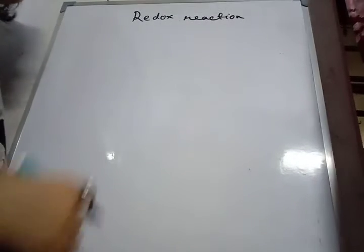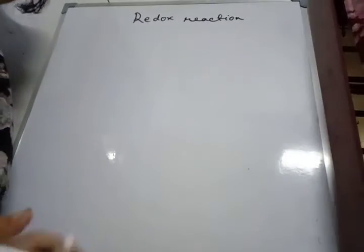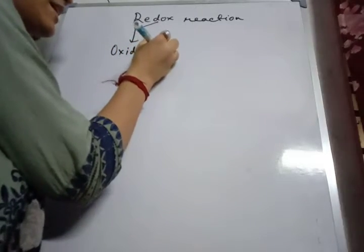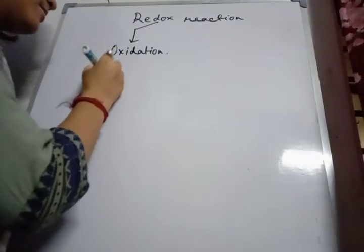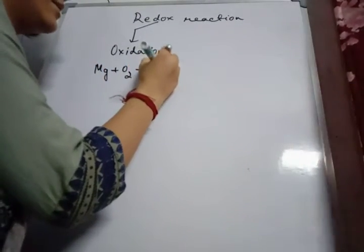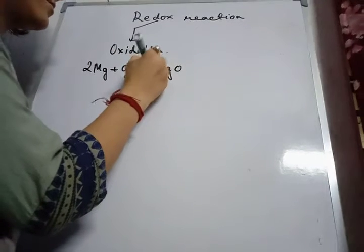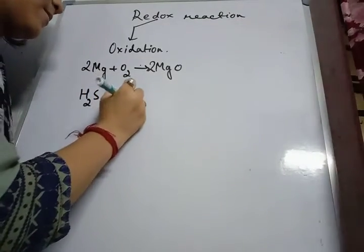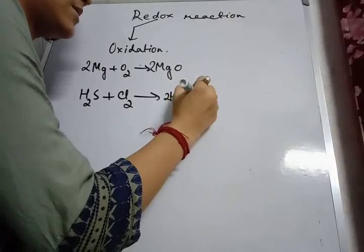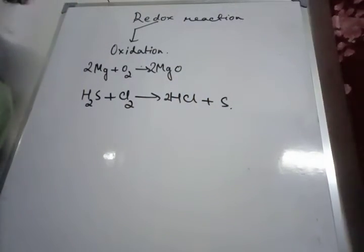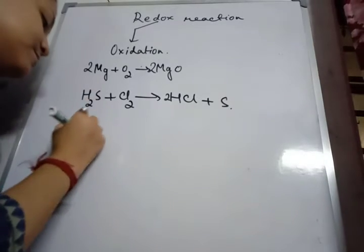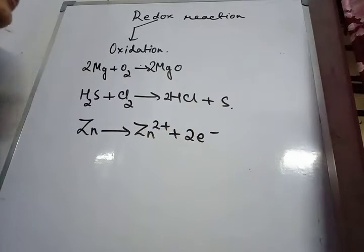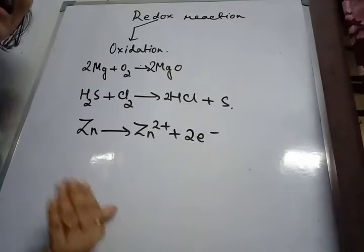We are going to define oxidation and reduction in terms of hydrogen, oxygen, and electrons. Oxidation involves addition of oxygen — for example, magnesium plus oxygen gives magnesium oxide. Oxidation also involves removal of hydrogen, and the third definition: oxidation involves loss of electrons. These are the few definitions of oxidation in terms of oxygen, hydrogen, and electrons.